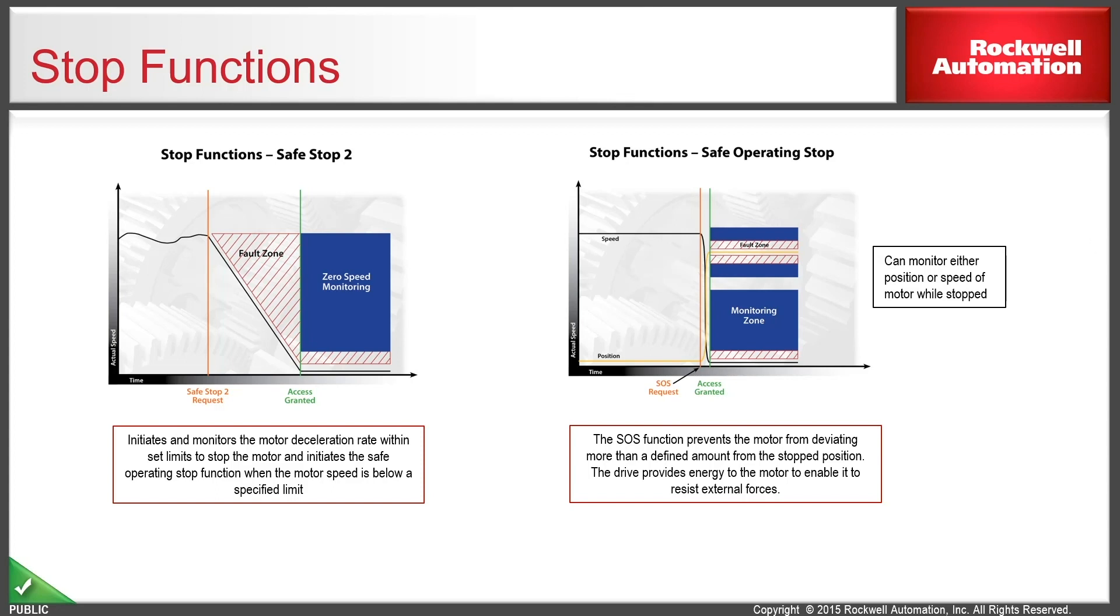A couple of other safety functions that revolve around stopping would be a safe stop two function. A safe stop two function would be where you bring the drive to a controlled stop and then you leave the drive enabled after you bring the access to a stop. So a safe stop one is a ramp to a stop and turn the drive off. A safe stop two is a ramp to a stop and then you leave the drive enabled. The difference though is again not only that you're leaving the drive enabled but typically at the end of a safe stop two you would transition into something called the safe operating stop where you're doing zero speed monitoring or zero position change monitoring.